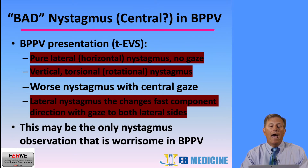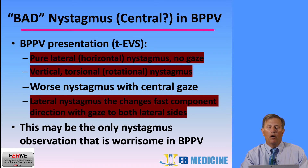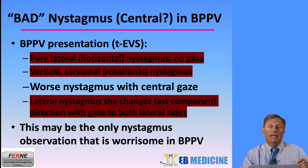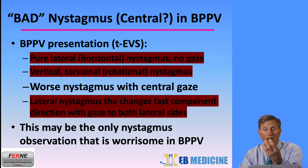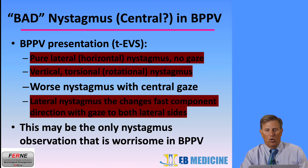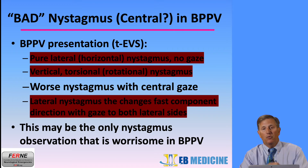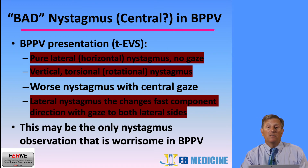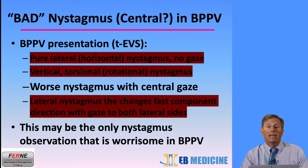We had a list of bad nystagmus findings suggesting central etiology for acute vestibular syndrome. However, in BPPV — a triggered episodic vestibular syndrome — there is only one nystagmus finding that may suggest a central etiology: if with central gaze the nystagmus appears to worsen, this is the one finding that may suggest a central etiology, even if the history sounds more like a triggered episodic vestibular syndrome and likely BPPV.